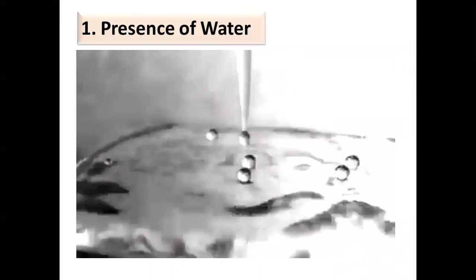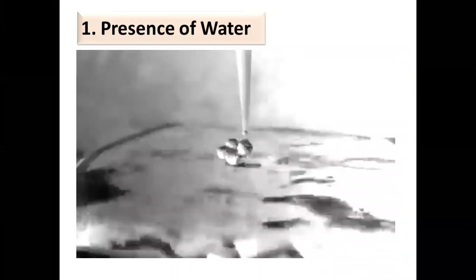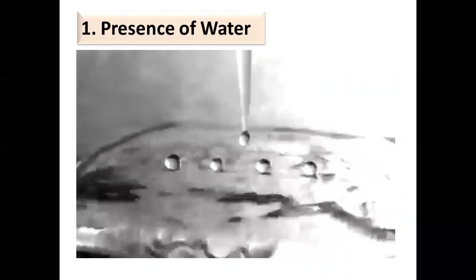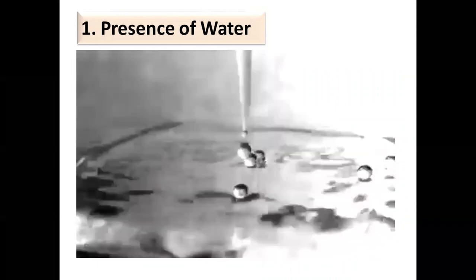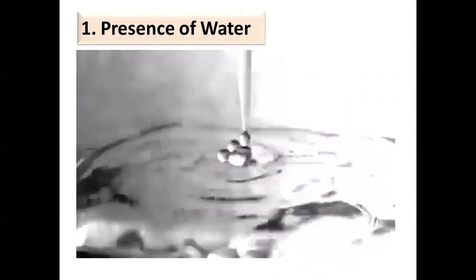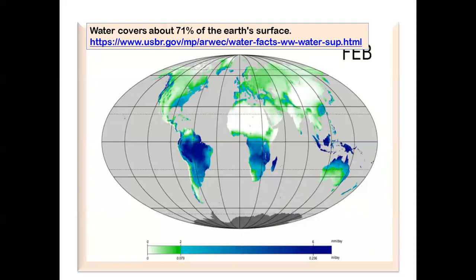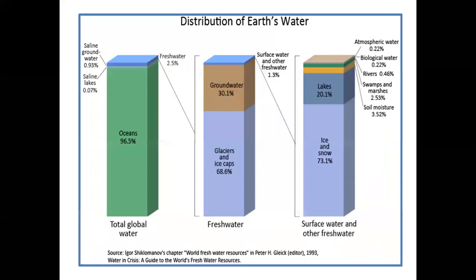First, the presence of water. Water covers about 71% of Earth's surface. It is found everywhere — above the Earth in the air and clouds, and on the Earth's surface in rivers, oceans, ice, plants, and in living organisms.